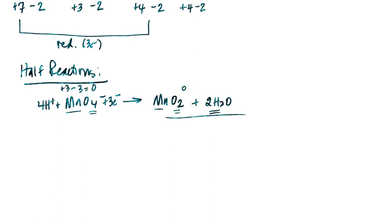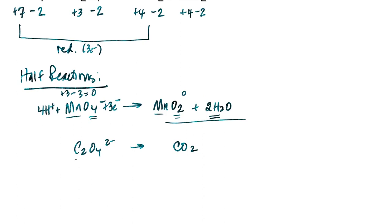For the oxidation half-reaction, the oxalate ion C₂O₄²⁻ goes to carbon dioxide CO₂. There are 2 carbons and 4 oxygens on the left but only 1 carbon and 2 oxygens on the right, so multiply CO₂ by a coefficient of 2 on the right. Now balanced by mass. For charge: left side is −2; right side is neutral (0). Adding 2 electrons to the right makes both sides equal at −2. This half-reaction is now balanced.